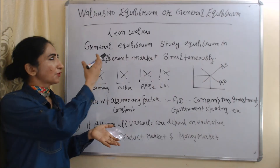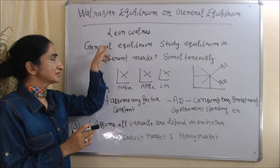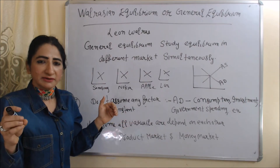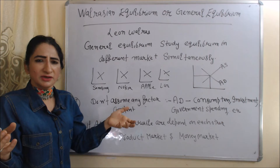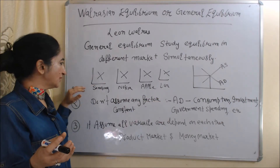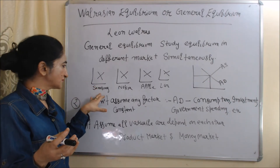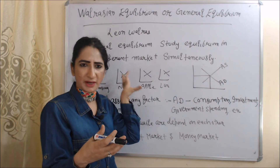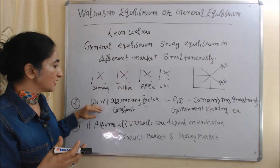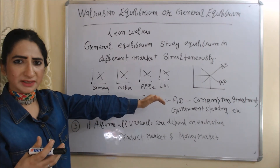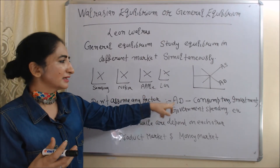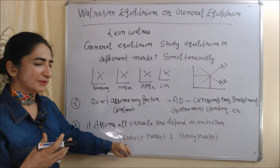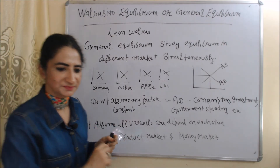Now we are going to talk about Walrasian equilibrium, or general equilibrium. It is given by Leon Walras. General equilibrium studies different markets simultaneously — not in isolation like Marshall. For example, it studies demand and supply of Samsung, Nokia, Apple, and LG simultaneously, arriving at aggregate demand and aggregate supply for the whole market. It does not assume any factor is constant and assumes all variables are dependent on each other — for example, how the product market and money market depend on each other.